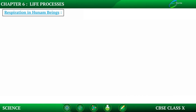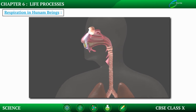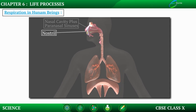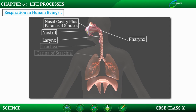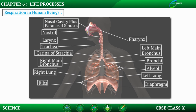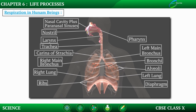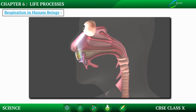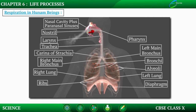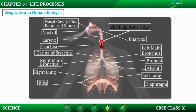Now let's discuss respiration in human beings and look at the organs involved. In human beings, air is taken into the body through the nostrils. The nostrils are lined with small hairs and mucus, which filter the air that passes through. This inhaled air then passes through the throat and moves through a pipe called the trachea. The trachea contains small rings of cartilage, which ensure smooth flow of air into the lungs.